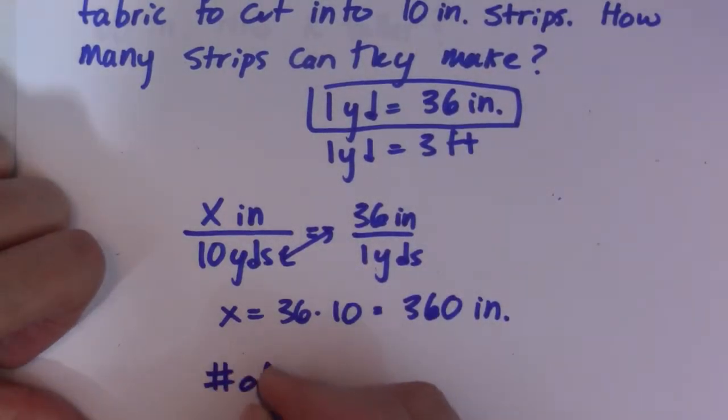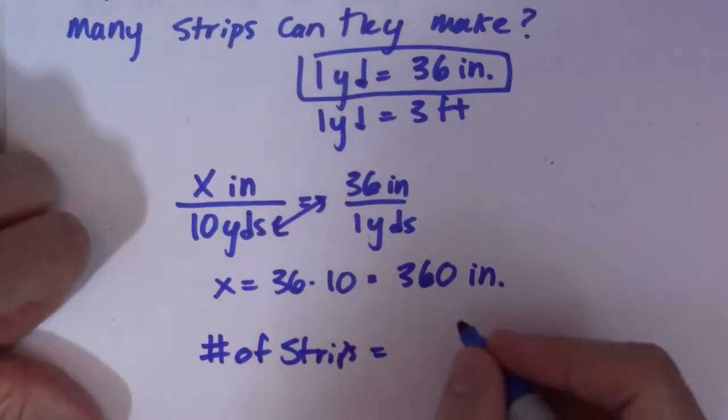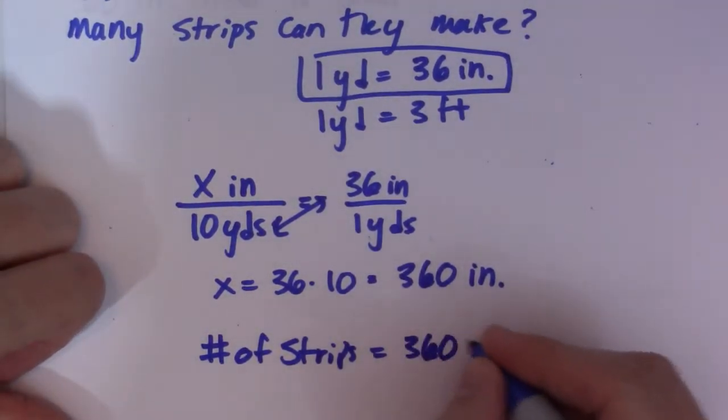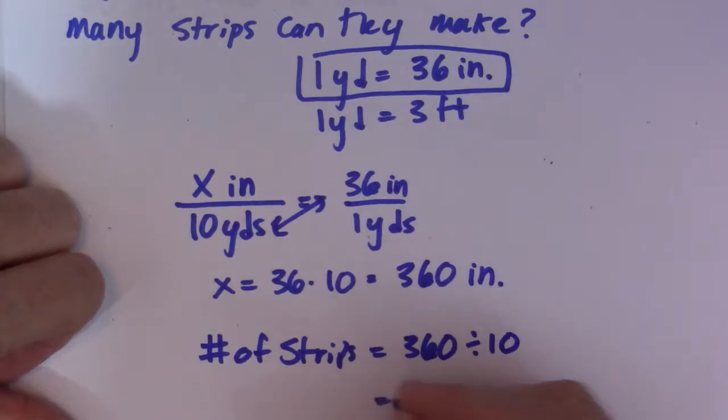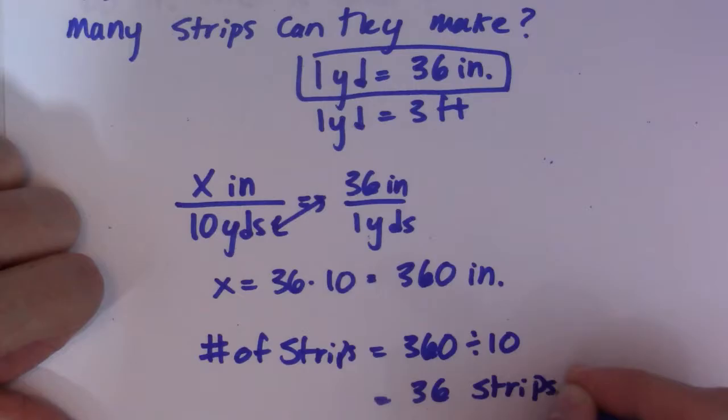Number of strips - I'll take 360 and divide it by 10, and that'll give me 36 strips. And there it is.